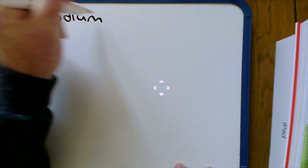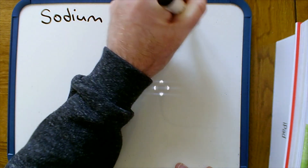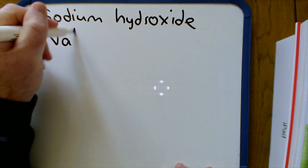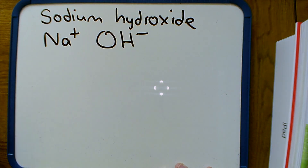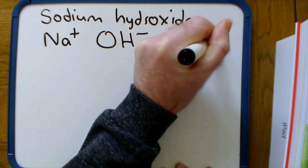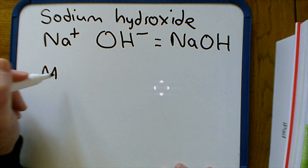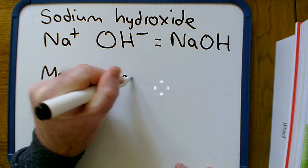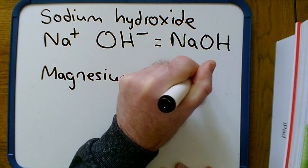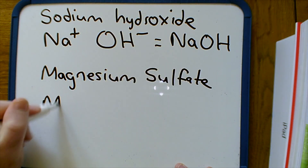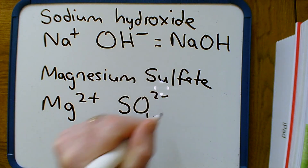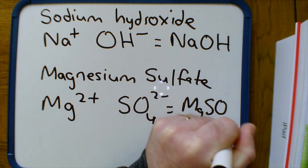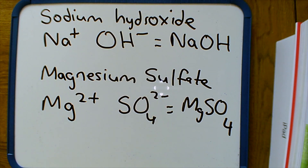Now let's look at examples with molecular ions — molecules that carry a charge. For sodium hydroxide: the ion is Na+ and the hydroxide ion is OH−, a molecular ion. The charges are 1+ and 1−, so they cancel out, giving the formula NaOH. For magnesium sulfate: magnesium is a group 2 element with a 2+ charge, Mg2+, and the sulfate ion is a molecular ion, SO4 2−. Because both have the same unit of charge — 2+ and 2− — they cancel out, giving the formula MgSO4.